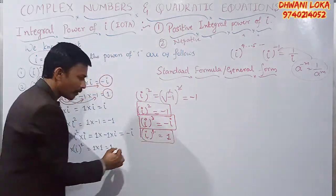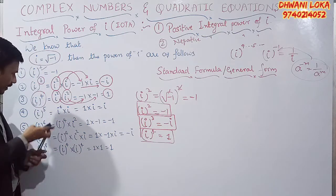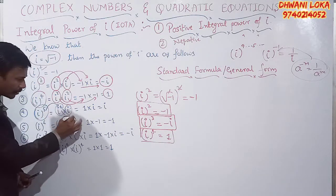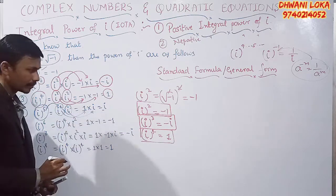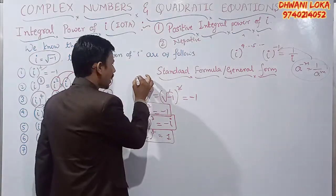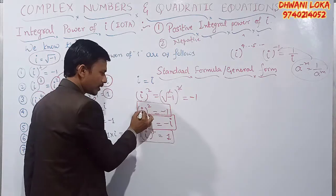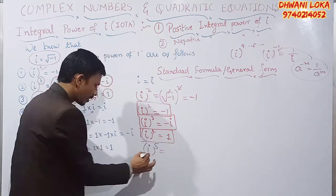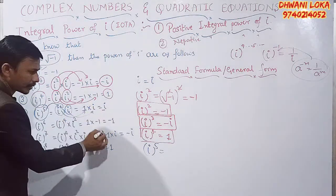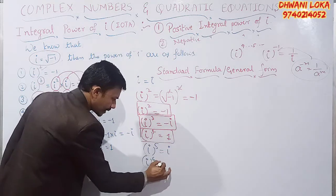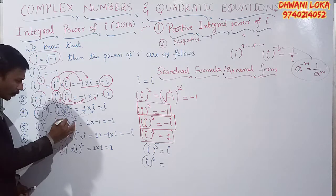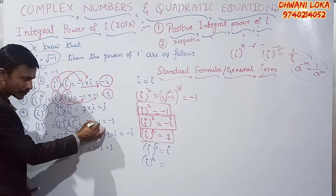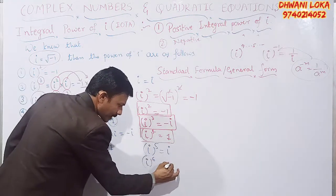Continuing the powers: i to the power 5 can be written as i to the power 4 into i. i to the power 4 is 1, so 1 into i is i. Therefore i to the power 5 equals i. For i to the power 6, write it as i to the power 4 into i squared. i to the power 4 is 1, i squared is minus 1, so 1 into minus 1 equals minus 1. Therefore i to the power 6 equals minus 1.